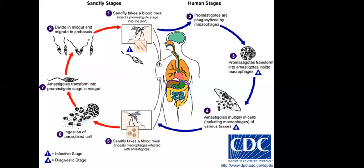The parasite deceives the macrophage into engulfing it as a foreign body. Inside, it destroys the phagolysosome mechanism, ending the macrophage's normal defense function. This is the parasite's immune evasion strategy — it multiplies inside the immune system's own cells. The infected macrophage moves freely in circulation without being recognized as foreign by the immune system, while carrying the parasite as an obligatory intracellular organism.